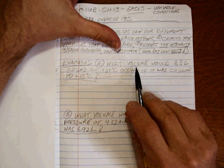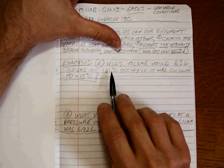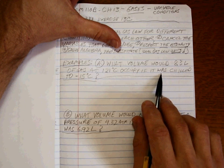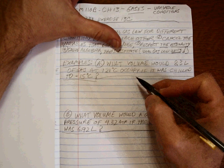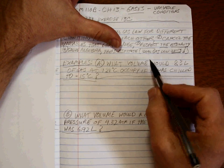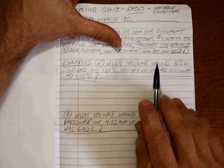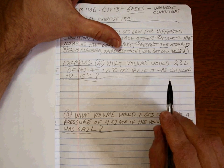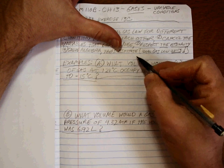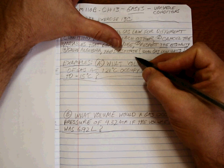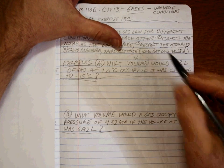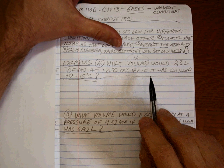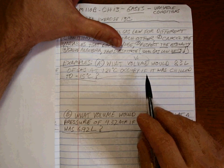So what volume would 8.3 liters of gas at this temperature occupy if it was then chilled down to negative 15 degrees Celsius? Here's the deal. We want to recognize that the key to this is really putting the conditions together that belong together. So what volume? So we're going to solve for a volume, and you can call this volume 1, volume 2, volume A, volume B, volume initial, volume final. It doesn't matter. I'm going to call it V1. If this volume is V1...